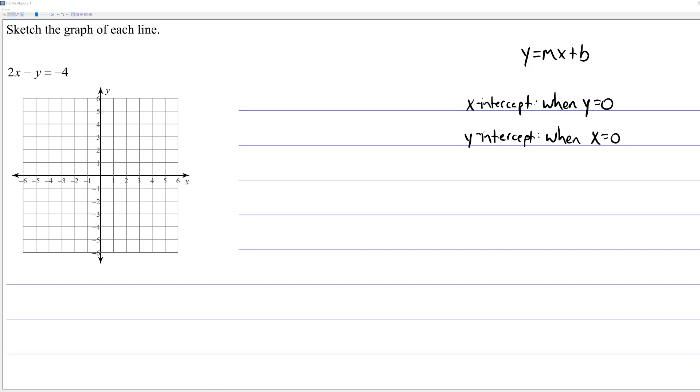Hi everybody. This video is about graphing lines if they're not in slope-intercept form. In the last video, we learned about slope-intercept form, which is commonly written as y equals mx plus b. As you can see, this equation does not look like y equals mx plus b.